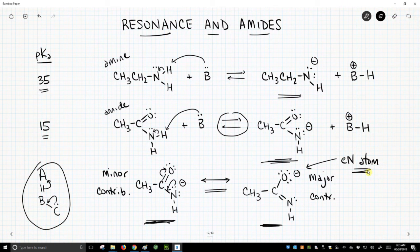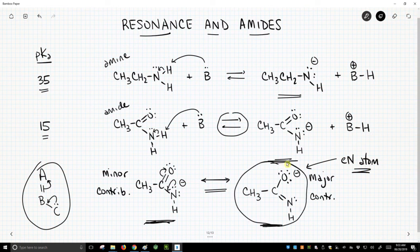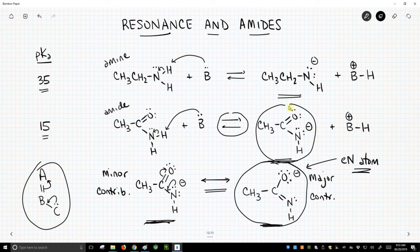So this gets pretty complicated because sometimes multiple factors are at play, but we have to narrow it down to what's the most important thing. Really, this is the resonance form that explains the stability of this particular conjugate base, and it's because we have the negative charge on an oxygen instead of a nitrogen.